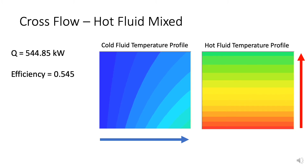Moving on to the hot fluid mix system, we see that for the hot fluid, the temperature gradient is reduced to a single dimension, while the cold fluid temperature profile looks very similar to the previous system. The hot fluid temperature profile is reduced to a single dimension because it can mix with itself — in the horizontal direction, there's no difference in temperatures at all, as the temperature equalizes through mixing of the hot fluid. The heat transfer reduces to 544.85 kilowatts, and the efficiency drops to 0.545.